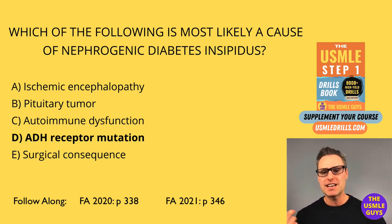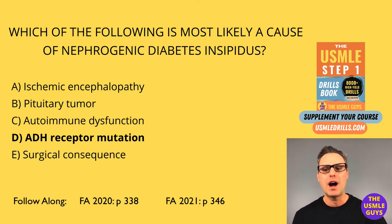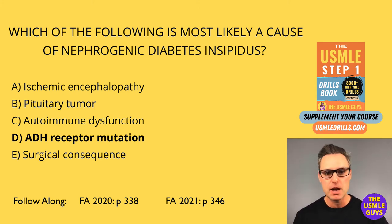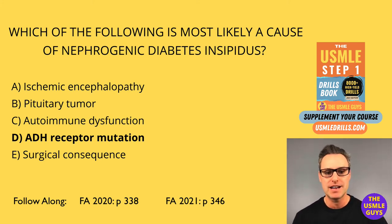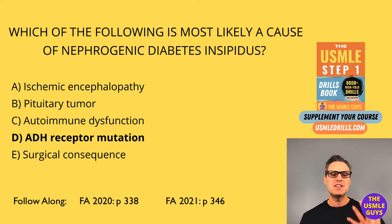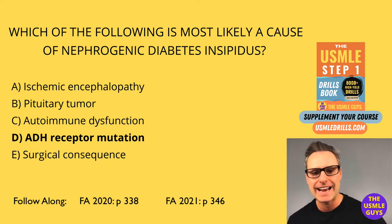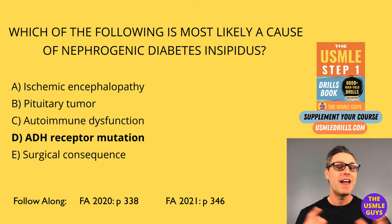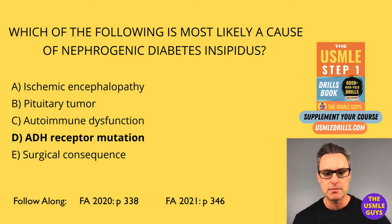A commonly asked pharmacologic association is its link to lithium, which is known to induce nephrogenic diabetes insipidus. And if given an ADH antagonist like demeclocycline, that too could be a cause of nephrogenic diabetes insipidus.